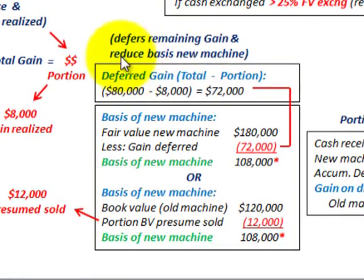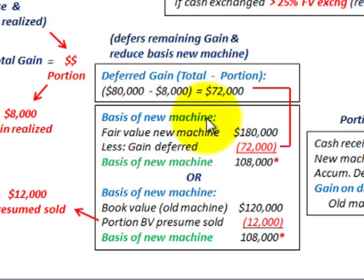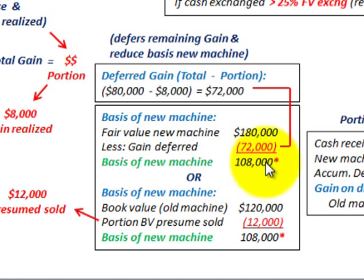Now let's look at how we record this. We're going to have to defer the remaining gain and reduce the basis of the new machine. We have the portion we have to recognize of $8,000, and the total gain of $80,000. The deferred gain is simply the difference: $80,000 less the $8,000 portion we're realizing gives us a deferred gain of $72,000. For the basis of the new machine, we take the fair value of the new machine, $180,000, less the deferred gain of $72,000, giving us a basis of $108,000.